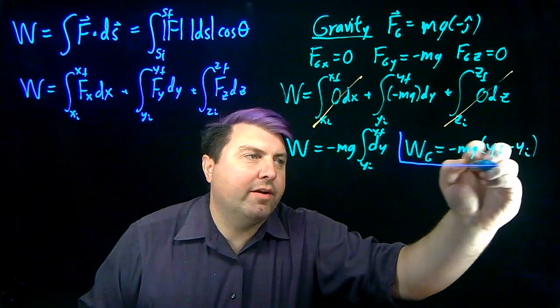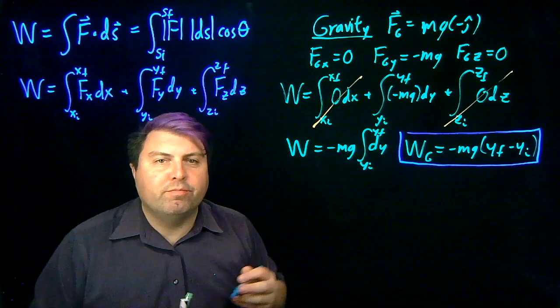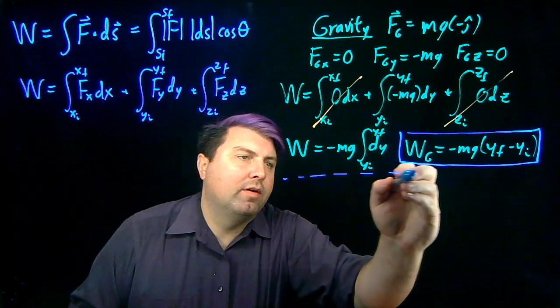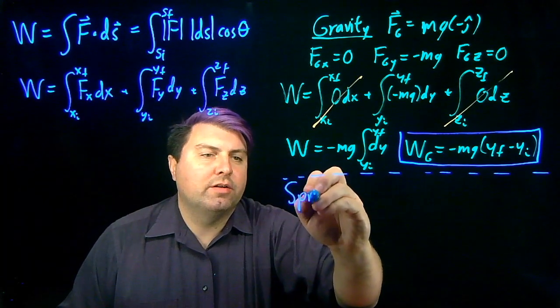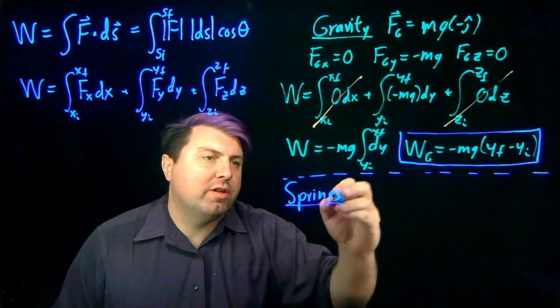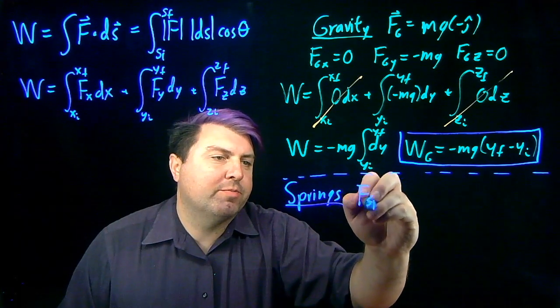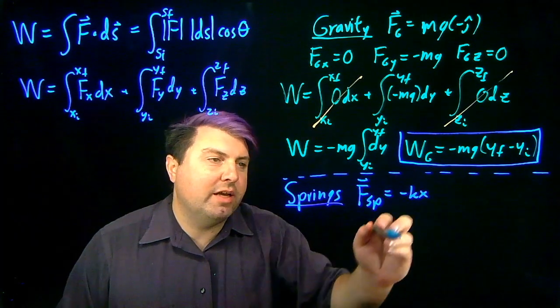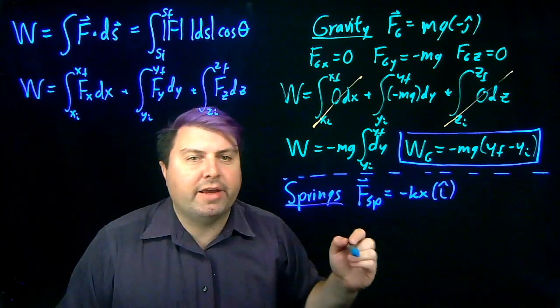So, that's how we calculate work, right, as we can do that. Let's have another example. Let's look at springs. If we have our spring force from Hooke's law, our Hooke's law said the force from a spring is equal to negative kx in its direction, so we can say, then, i hat.